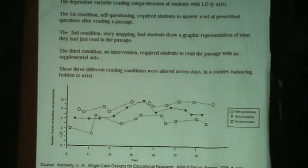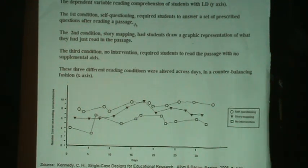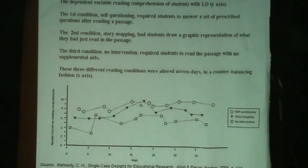Here, the dependent variable was reading comprehension of a student with learning disabilities — let's say the number of problems they got right on reading comprehension, going from zero to ten. There were three conditions. The first condition, represented by the round circle, was self-questioning, which required students to answer a set of prescribed questions after reading a passage. We can see from the graph that the student seemed to comprehend pretty well when using self-questioning.